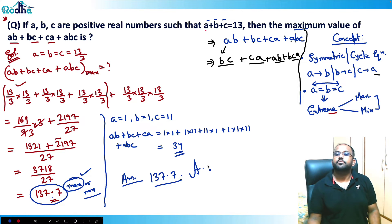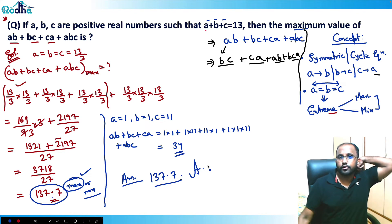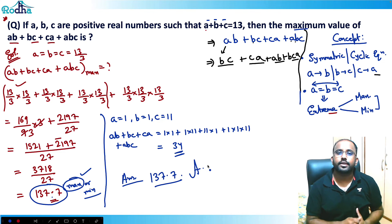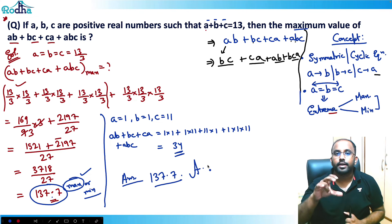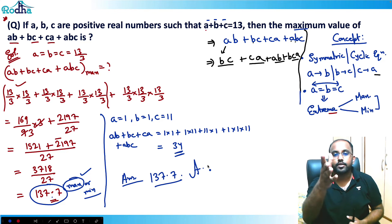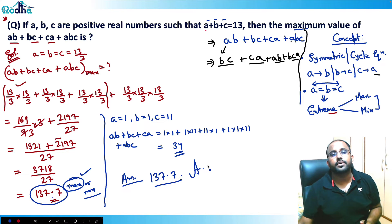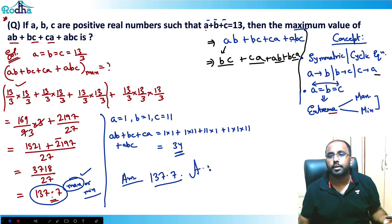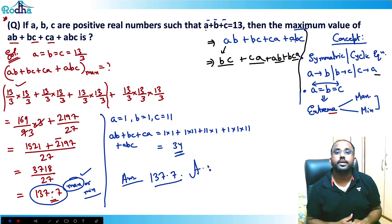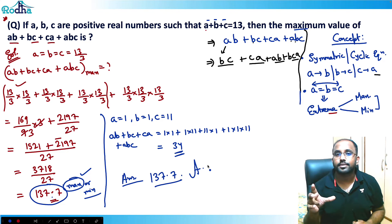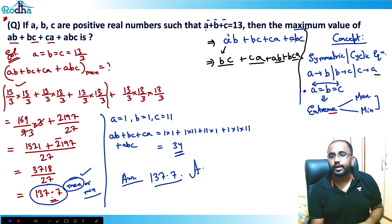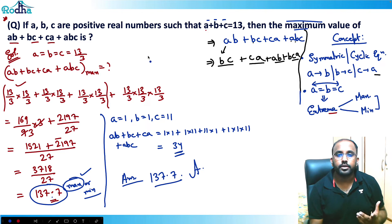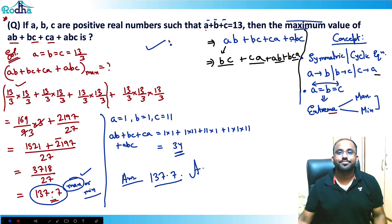So the funda is: in any symmetric or cyclic equation, once I equate the variables I'll be getting the extrema — that is maxima or minima. Many books and websites say directly that you'll get the maximum or minimum by equating, but that's wrong. You get extrema, which could be either, and you need to verify. That's the correct and complete information. Thank you.